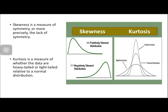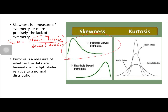Skewness is a measure of symmetry, or more precisely, the lack of symmetry. We compute for skewness using the formula: skewness equals 3 times the mean minus the median, divided by the standard deviation. If the mean is greater than the median, then it's positively skewed. If the median is greater than the mean, then it's negatively skewed.